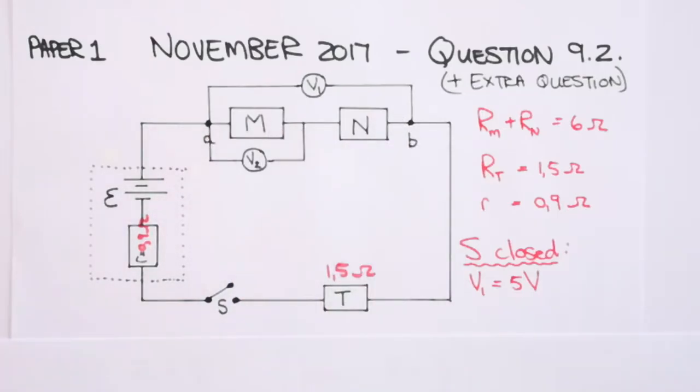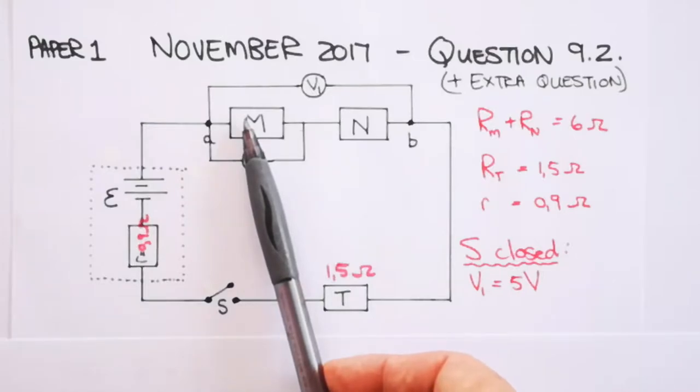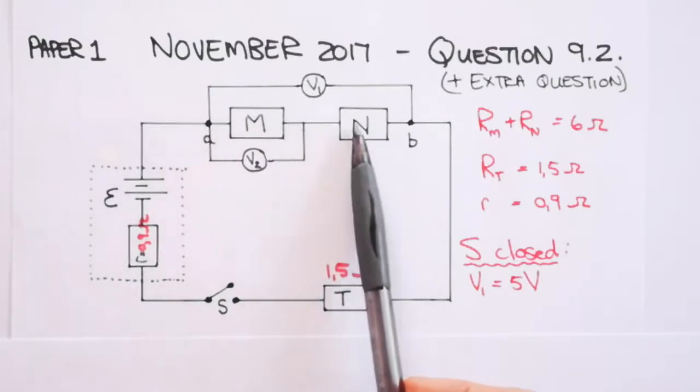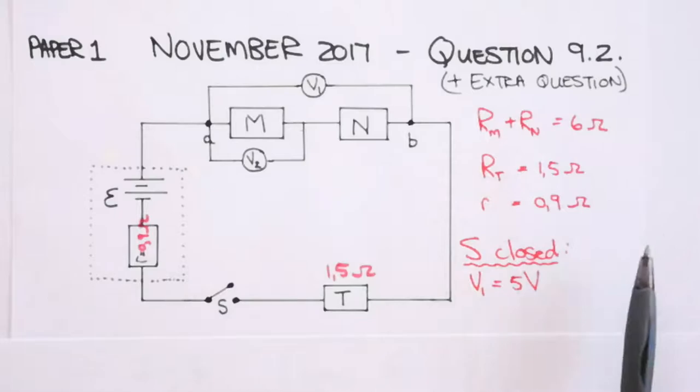I just want to go through something very quickly before we answer the questions. This EMF is divided up between four resistors. This voltage is divided up in four places. You have lost volts due to the current flowing through your battery. You have some of the volts of your battery used here to get charges through this resistor. Some of the volts are used there and some of the volts are used there. We know that the sum of these two voltages is 5 volts.